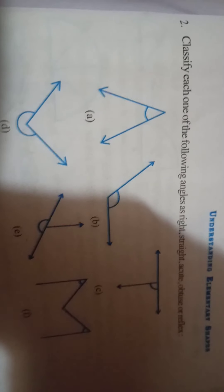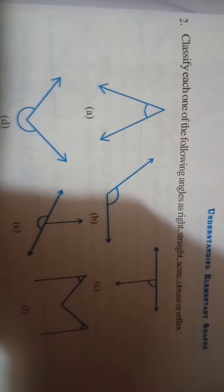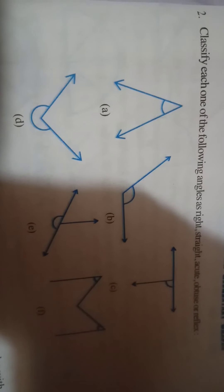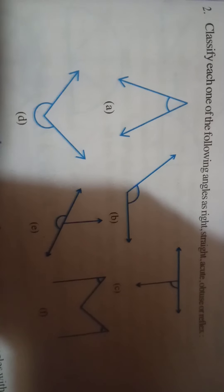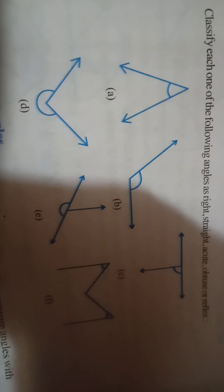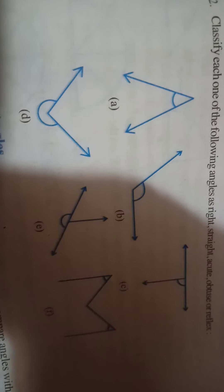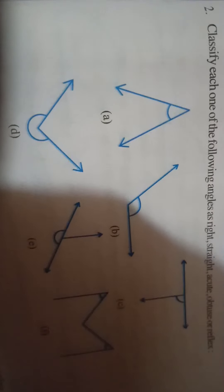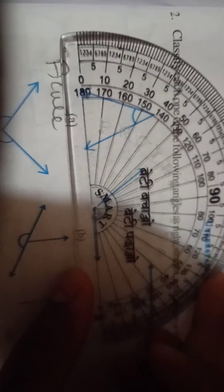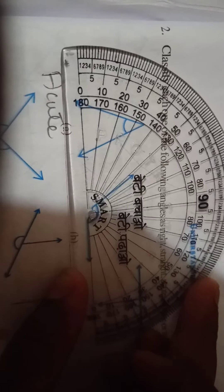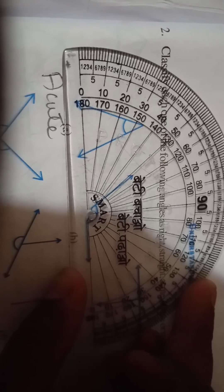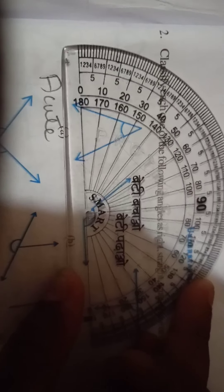Next: classify each of the following angles as right, straight, acute, obtuse, or reflex. We have 5 angles. The first angle is more than 80 degrees — the first one is an acute angle. The next angle is 90 degrees — but it is lower than 180 degrees, so this is an obtuse angle.